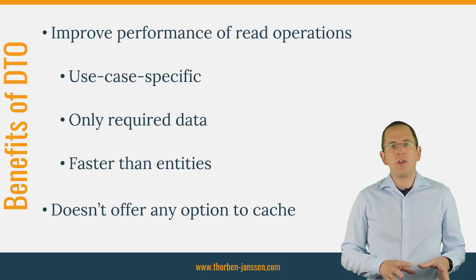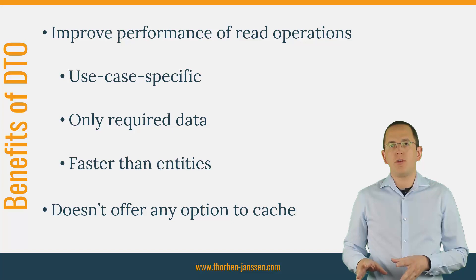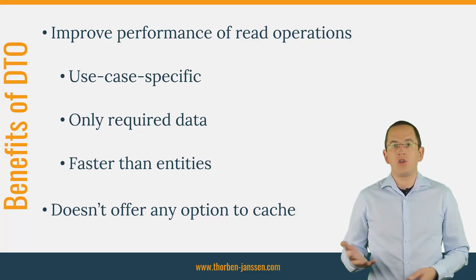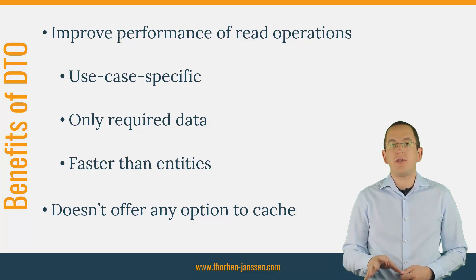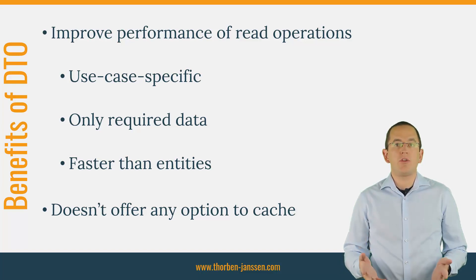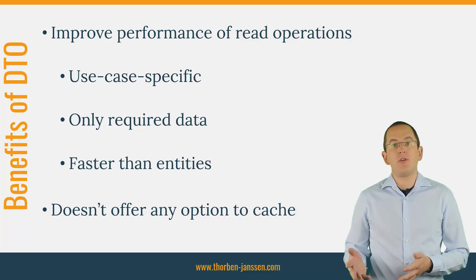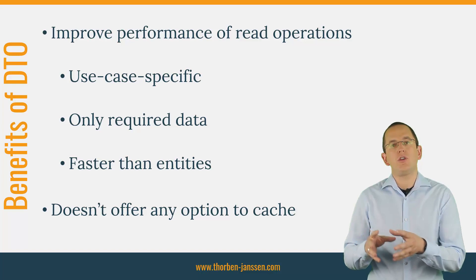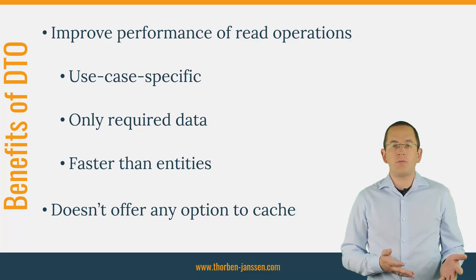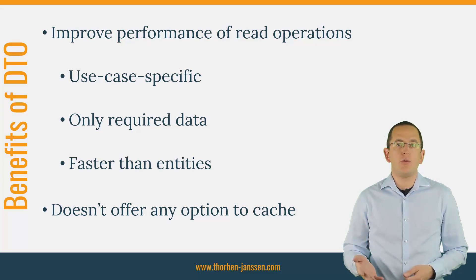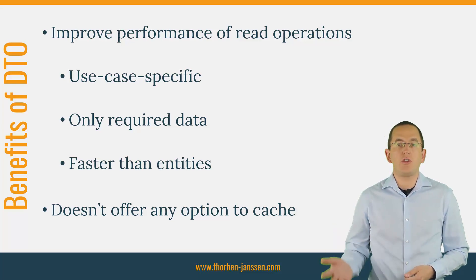DTO projections are one of the best and easiest ways to improve the performance of your read operations. In contrast to entities, which are part of the domain model and are used by multiple use cases, you can define a DTO projection for a specific use case. That enables you to implement a query that only fetches the data you need, and within that query you can use all features supported by JPQL, like selecting attributes from multiple entities or using database functions to transform your data.